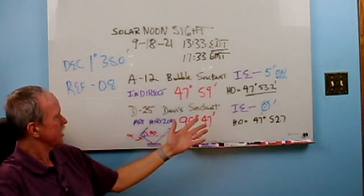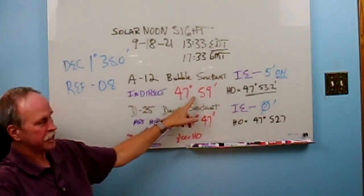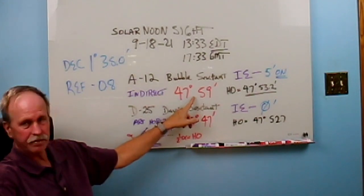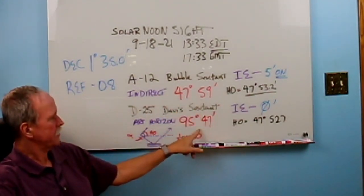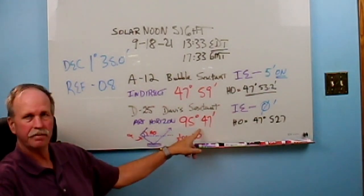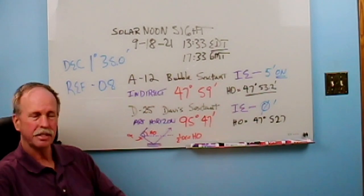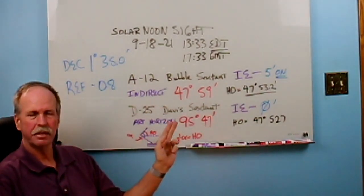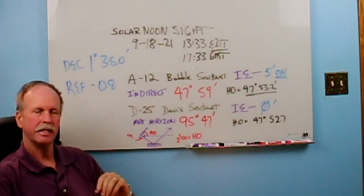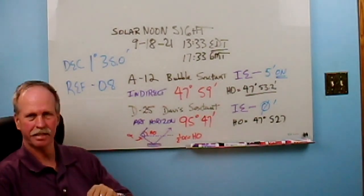And here are the readings that I got. On the bubble sextant, I got 47 degrees 59 minutes, and on the Davis sextant, I got 95 degrees 47 minutes. So let's cue up the music and see how I got these numbers, and then what I'm going to do with them to find my location. And then at the end, we'll have a little contest.